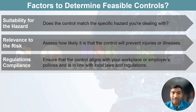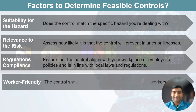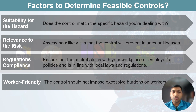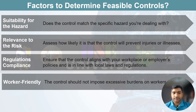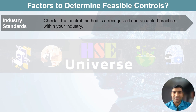Third, compliance with regulation — ensure that the control aligns with your workplace or employer's policy and is in line with local laws and regulations governing safety and health. It is vital to stay within legal boundaries. Fourth, worker-friendly — the proposed control should not impose excessive burdens on workers, otherwise people will not use it. It should be practical and not create additional hardship for employees. Fifth, industry standard — check if the control method is a recognized and accepted practice within your industry, following established safety norms and best practices.